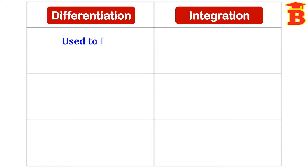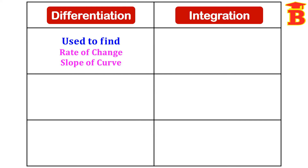Differentiation is used to find the rate of change — that means the change in one variable with respect to the change in another variable. It is also used to find the slope of a curve. If a curve equation is given, we can find dy/dx and then we can find the slope.